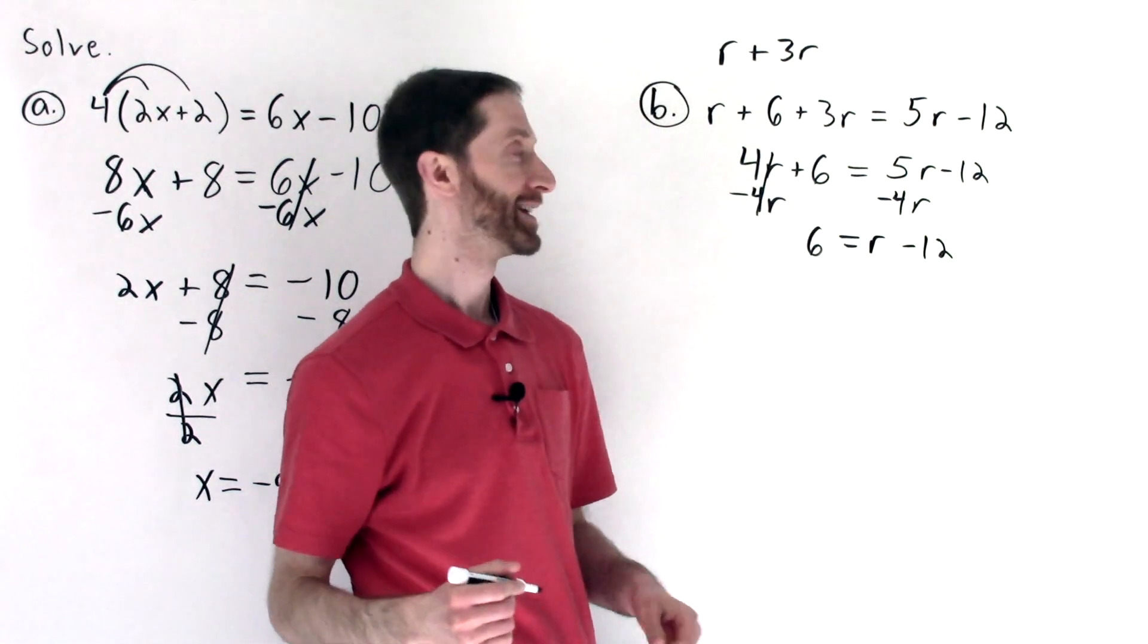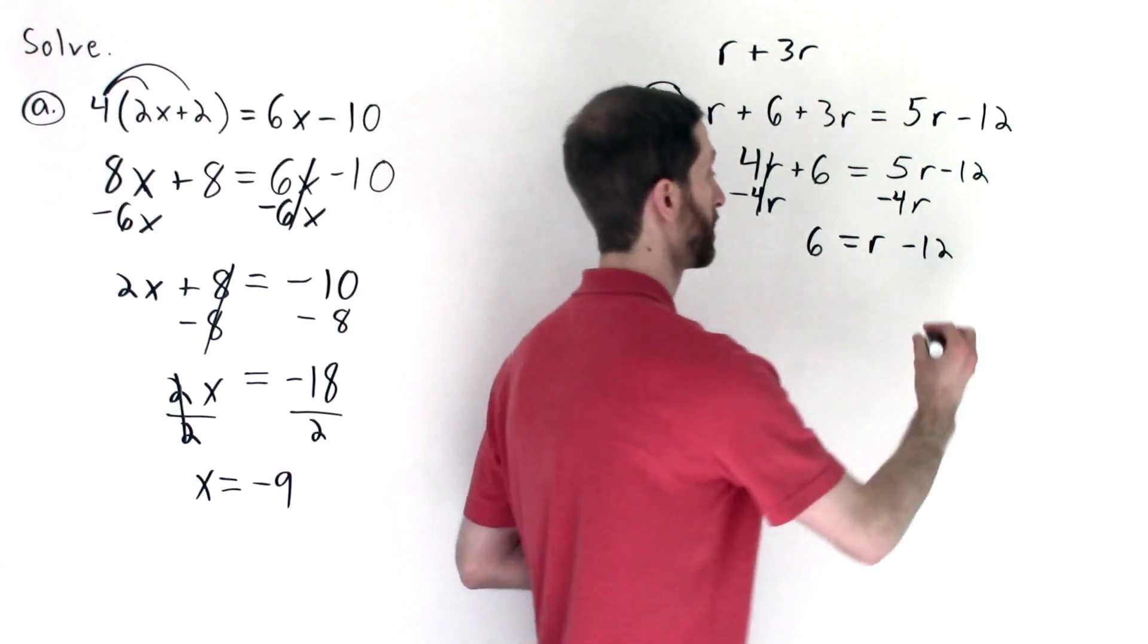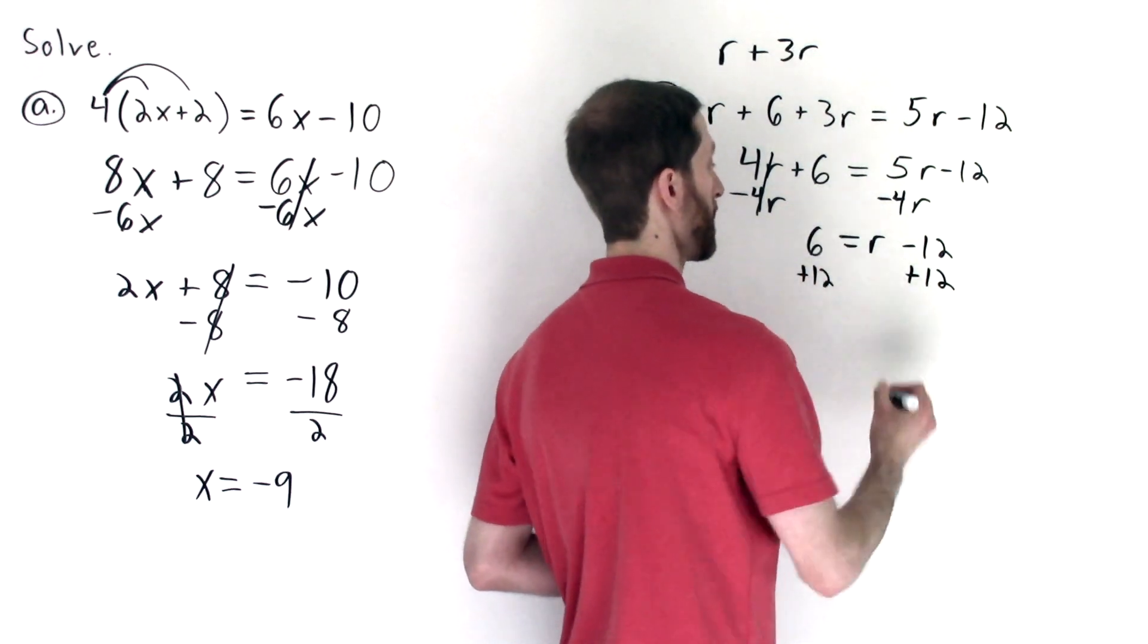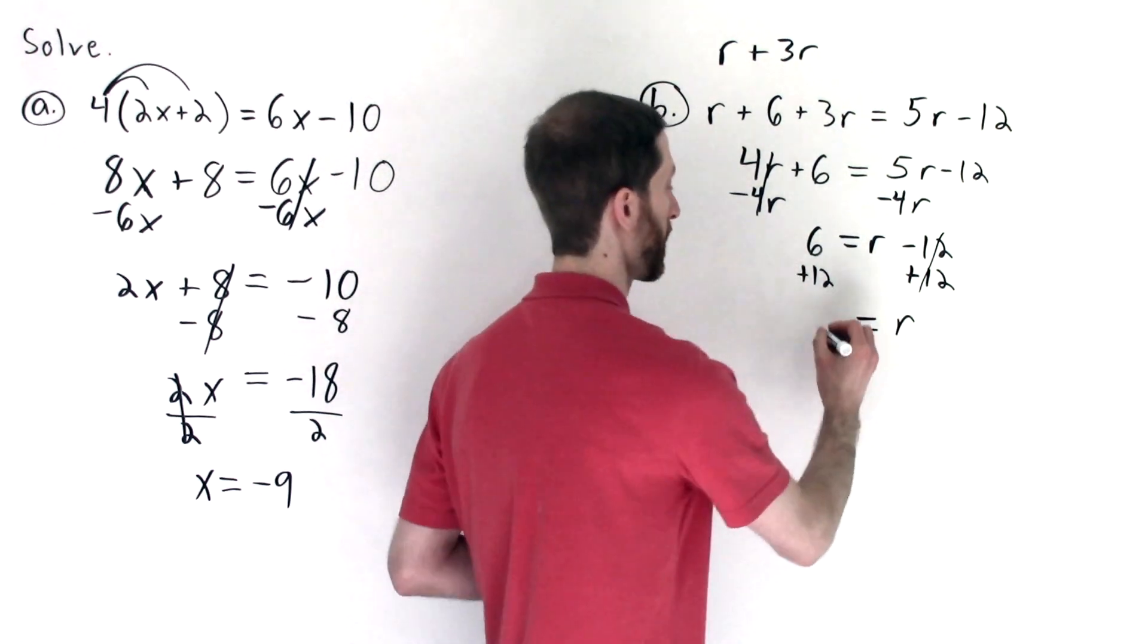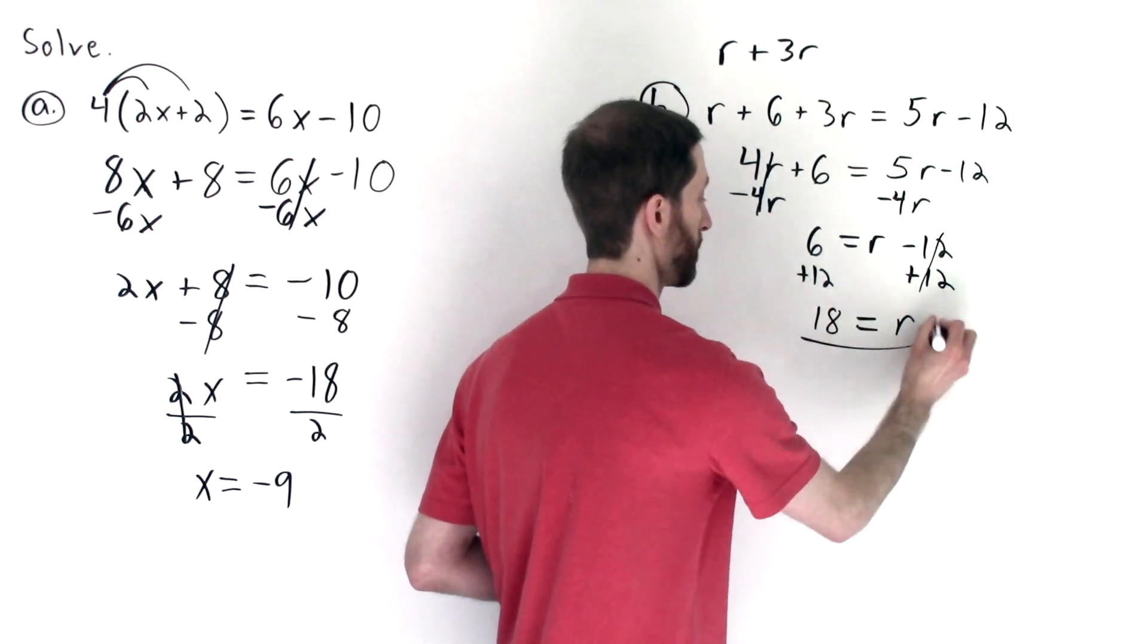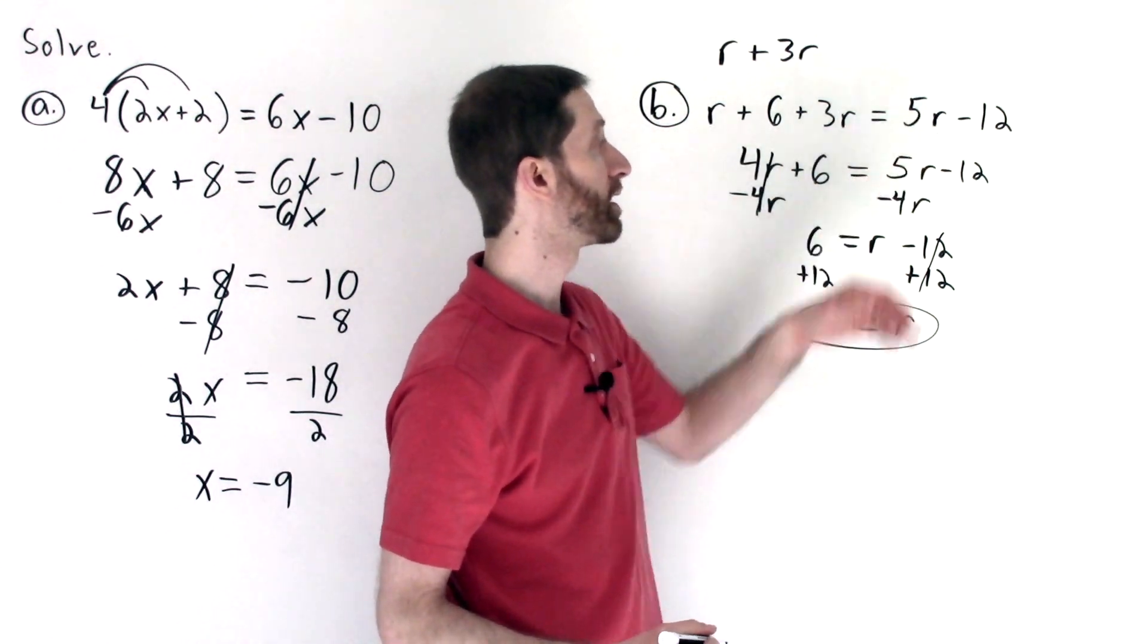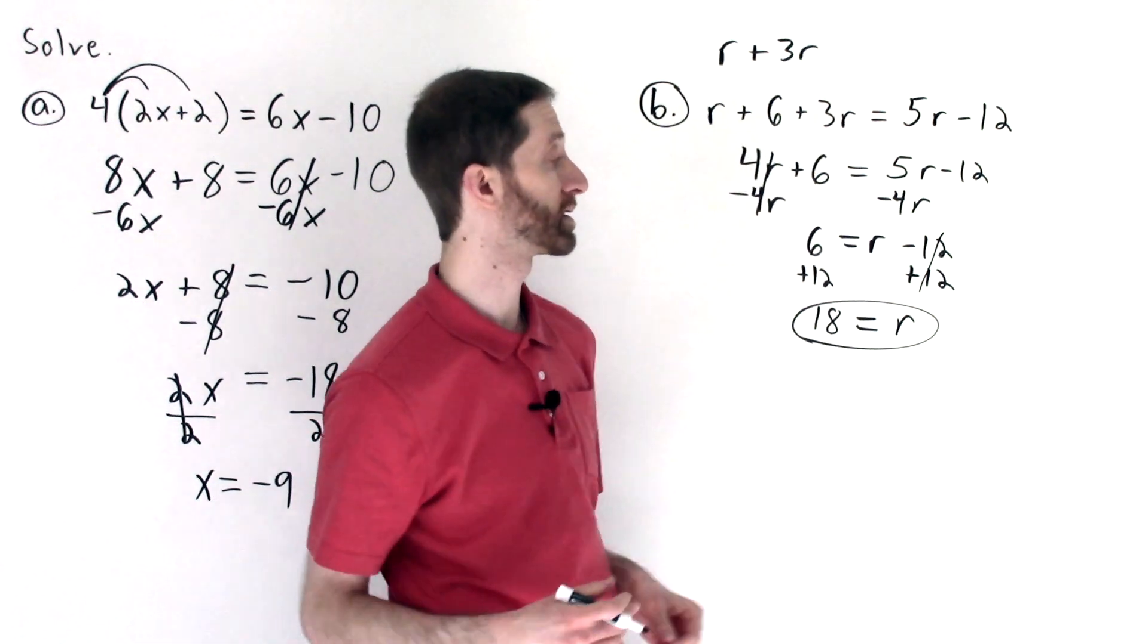Ah, sweet. To undo r minus 12, I have to undo minus 12 by adding 12, of course, to both sides of the equation. And that will cancel out the minus 12s. And what we have remaining is r and 6 plus 12 is 18. And there's your answer. And again, we could plug in 18 into the original r values there. And we would see that we would get a true equation or an equation with values that are the same on both sides.